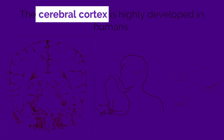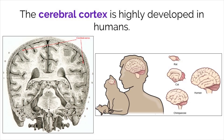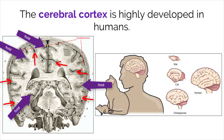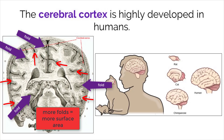The cerebral cortex of the brain is described as the outermost layer of tissue, seen in this image as these darker folds. This particular part of the brain is highly developed in humans compared to other organisms. One reason that the cerebral cortex is so large in humans is because it is heavily folded. All of these folds greatly increase the surface area, allowing more tissue to exist inside of the skull.